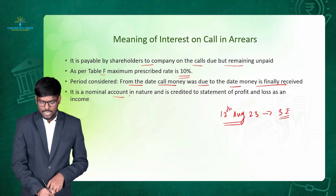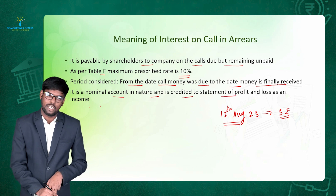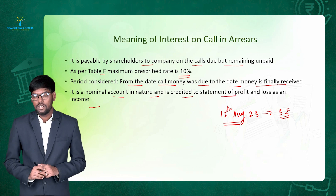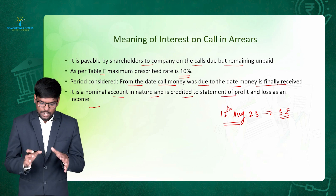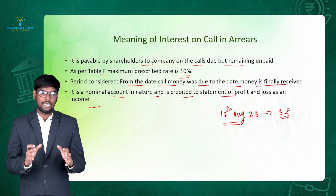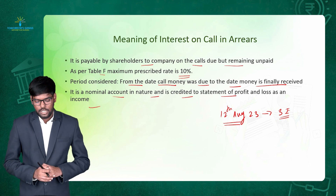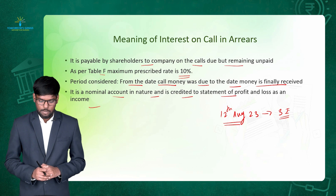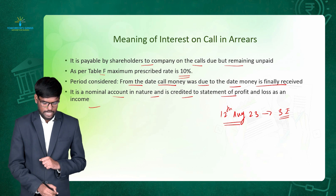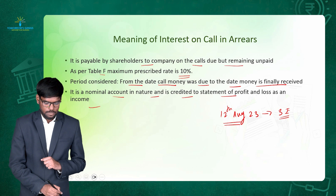Interest on call in arrears is a nominal account in nature and it is credited to the statement of profit and loss account as income. From the company's point of view, interest on call in arrears is income, and we have to credit it to the profit and loss account statement. Now let's see the accounting entries for call in arrears.